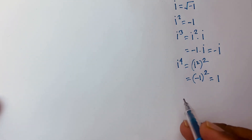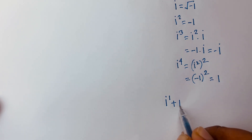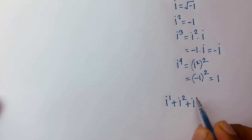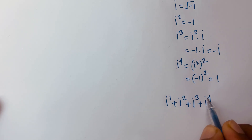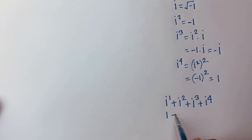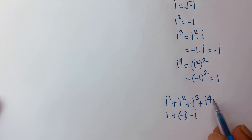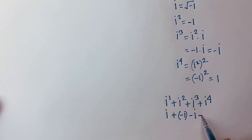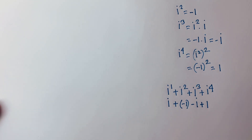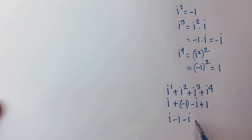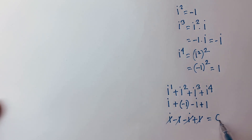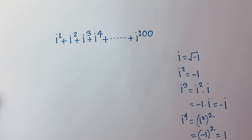Now I can say: i to the power 1 plus i squared plus i to the power 3 plus i to the power 4. That is i plus minus one, plus minus i, plus one. The ones cancel and the i's cancel, so the sum of the first four terms is zero.